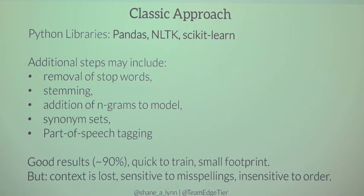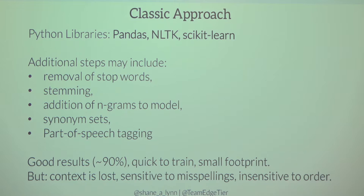What we found in our work is those models get us to 90% accuracy. They're really good — you can probably build a model in a couple of hours and it won't be memory intensive. What we've come to see though is that you do lose some accuracy for the intricacies of human communication. When dealing with freely written human text, you lose context, which is a big thing. These models are also sensitive to misspellings and insensitive to word order.